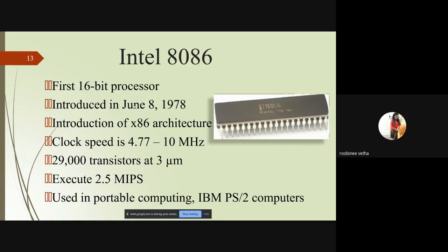Intel 8086 increased clock speed from 4.77 to 10 MHz, used 29,000 transistors, and introduced MIPS — an advanced version of instruction set. Transistors perform switching operations for electronic signals; for example, one transistor performs a switching operation for multiplication, another for division, and so on for logical operations.